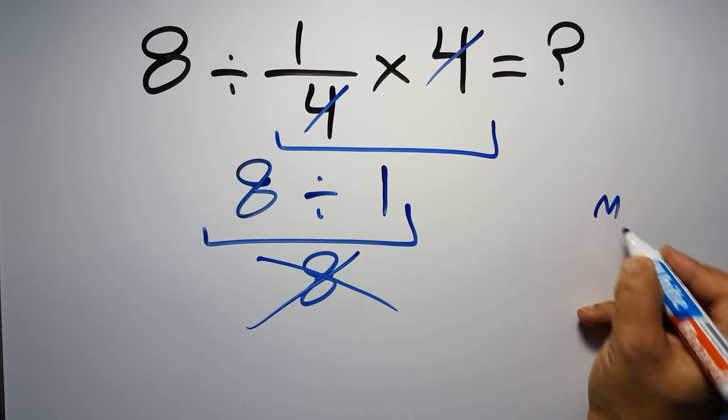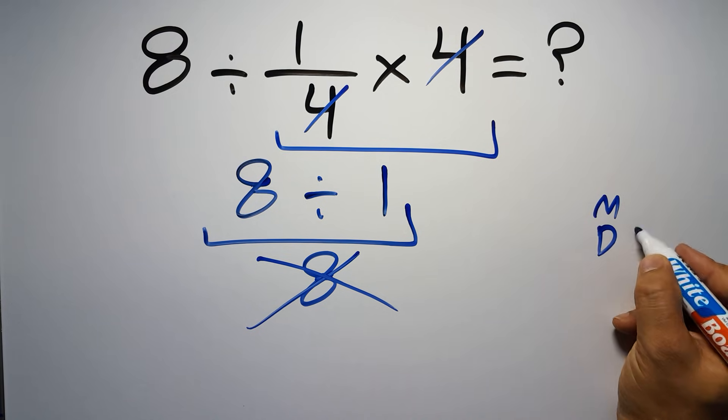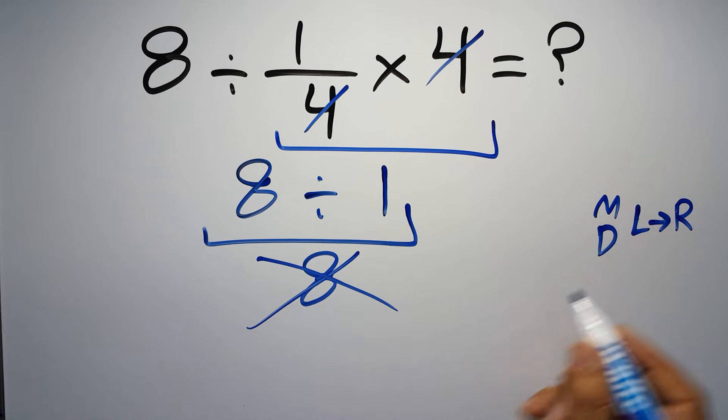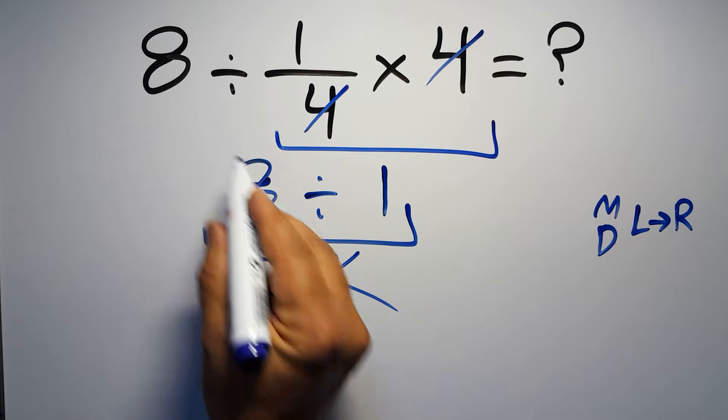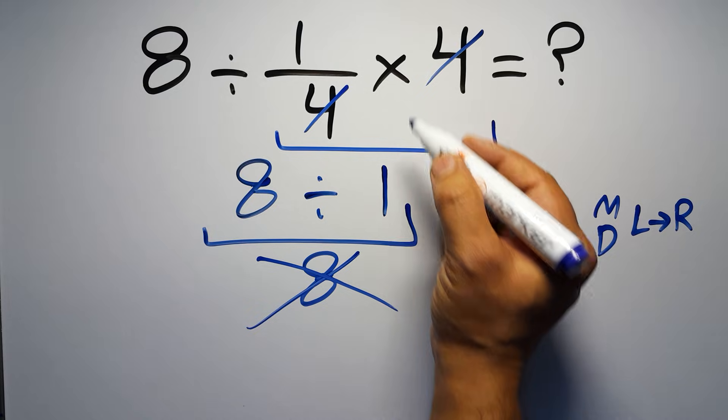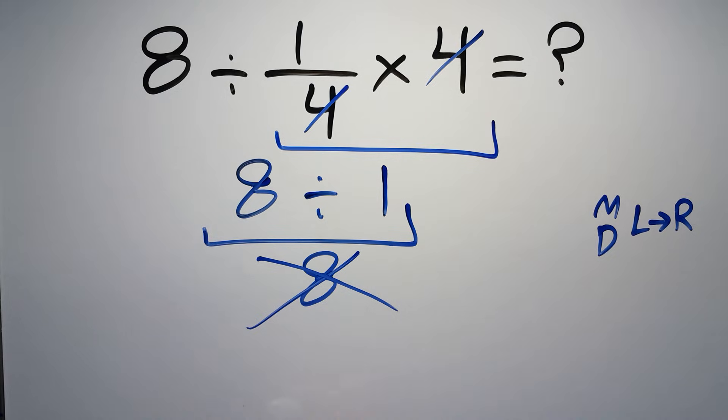We have to work from left to right. So here first we have to do this division, then this multiplication. If we do this multiplication before this division, it is wrong.